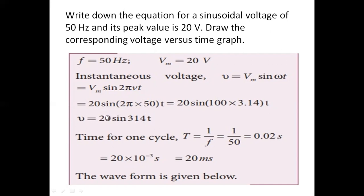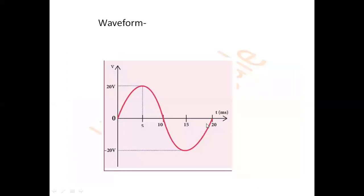So the instantaneous voltage equation is V = 20 sin(314t). The time for one cycle is T = 1/f = 1/50 = 0.02 seconds, that is 20 milliseconds. So the time for one complete cycle is 20 milliseconds. The sinusoidal waveform has a peak value Vm = 20 V and completes each cycle in 20 milliseconds.